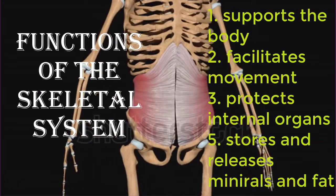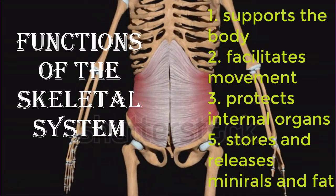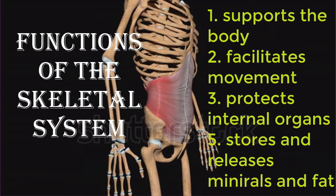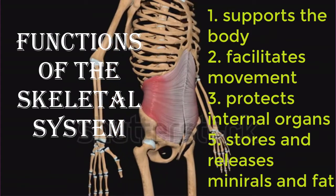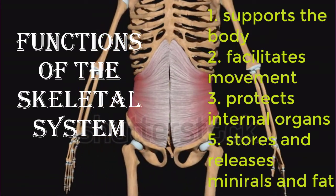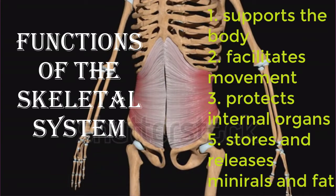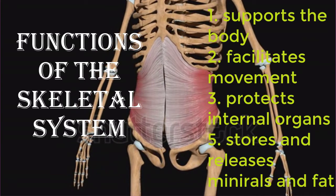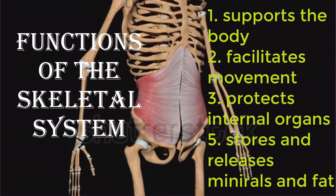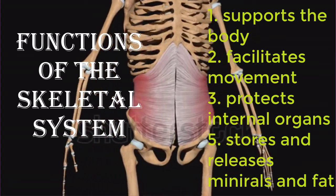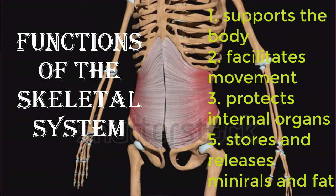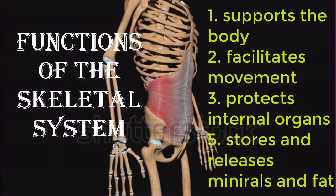The skeletal system performs the following critical functions for the human body: first, it supports the body; second, it facilitates movement; third, it protects internal organs; fourth, it produces blood cells; and fifth, it stores and releases minerals and fat.